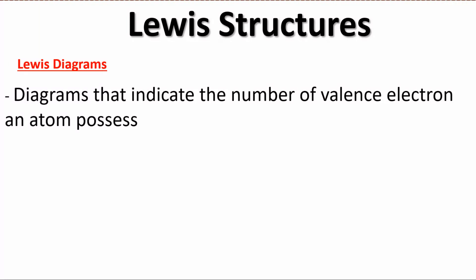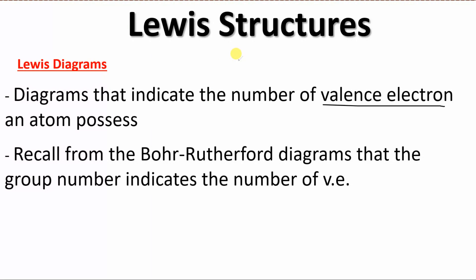We're going to start off this video by looking at something called a Lewis structure or a Lewis diagram. They are diagrams that show the number of valence electrons that an atom actually has. Recall from the Bohr-Rutherford diagrams that we would have drawn in a previous lesson that a shortcut for this is the group number that the element is in is going to tell you how many valence electrons that atom has.